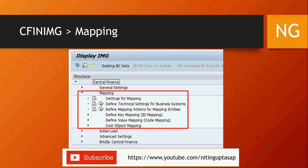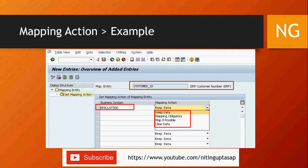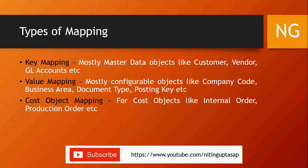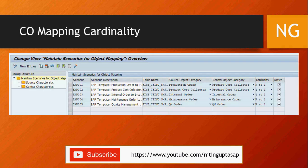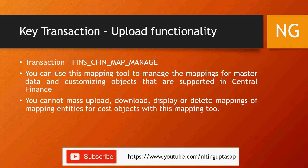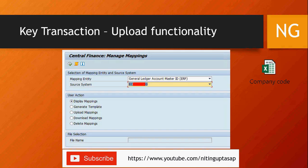Mapping actions — step three under Mappings is 'Define Mapping Actions.' Key mapping and value mapping are under their respective nodes. CO mapping has its own transaction. The upload/download tool supports display, upload, download, delete, and generate template as standard functions.